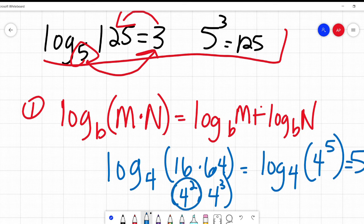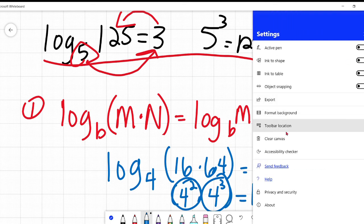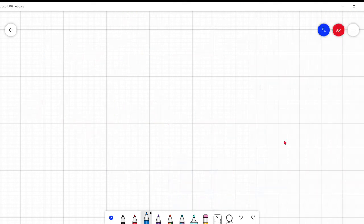If I'm saying it's the same as saying log base 4 of 4 squared plus log base 4 of 4 cubed, 2, 3, 2 plus 3 is 5. So as the saying goes, I think we've beat that dead horse.